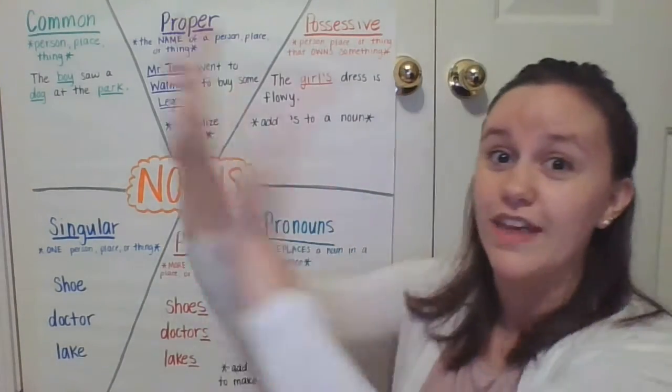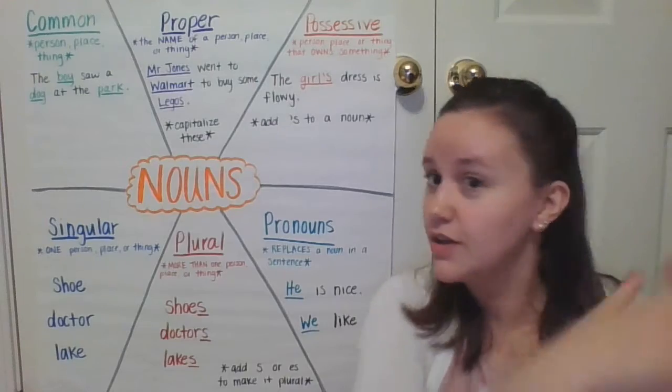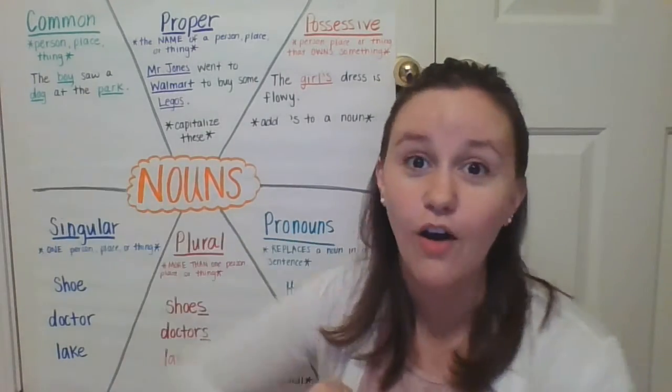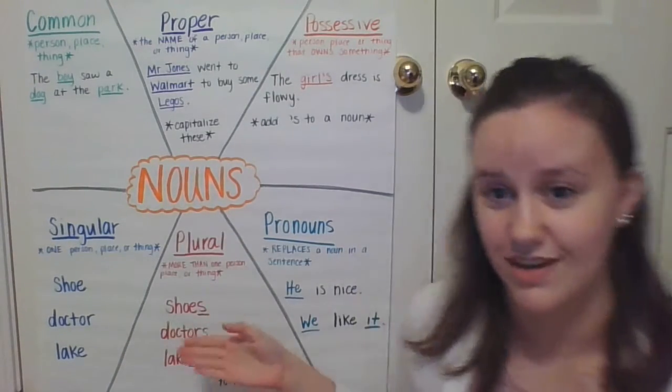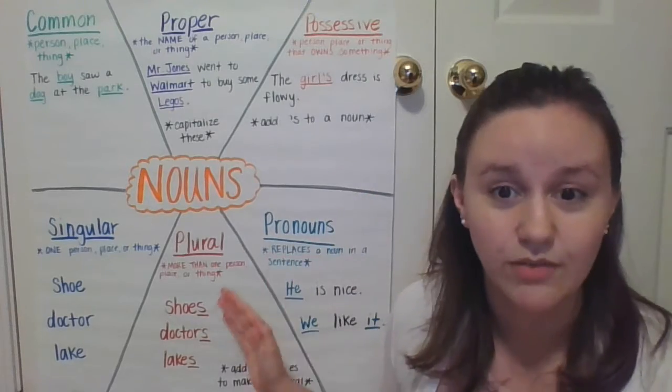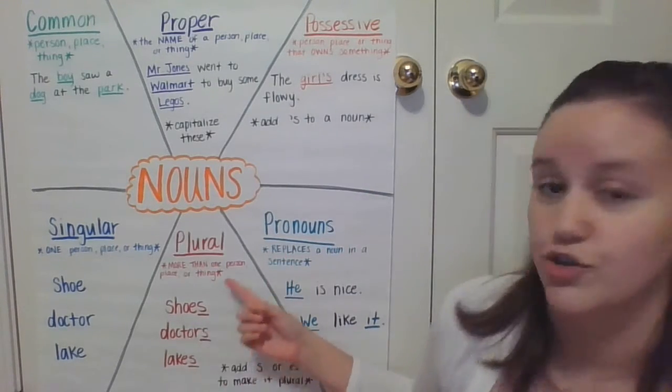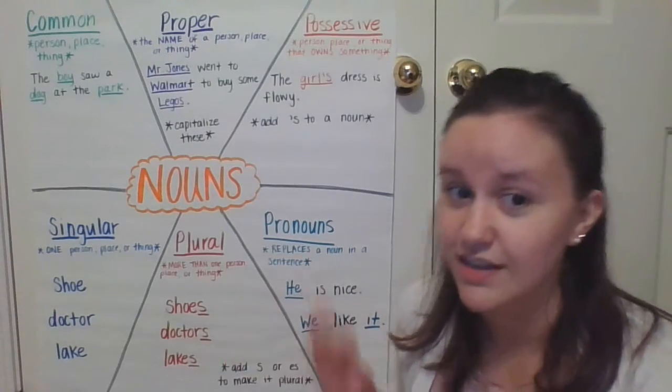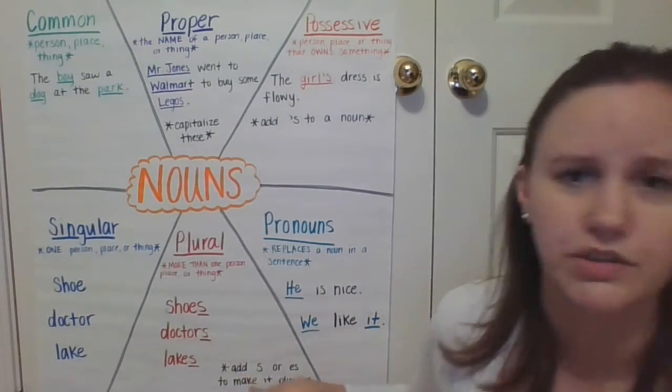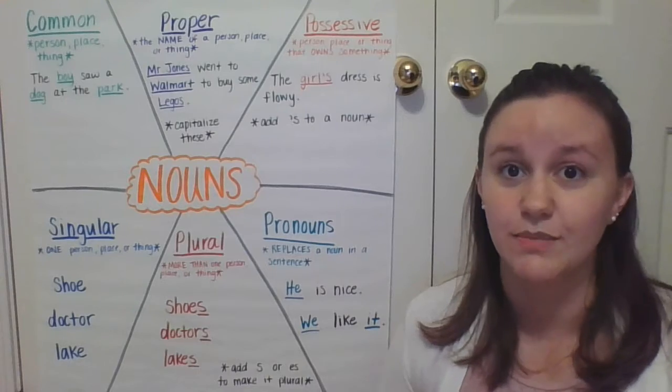Plural is more than one. So if you have two, three, four, five, all of the numbers. If you have more than one thing, then it's a plural noun. More than one person, more than one place, more than one thing. Like shoes, doctors, lakes. Usually you add an S or an ES to make it plural.